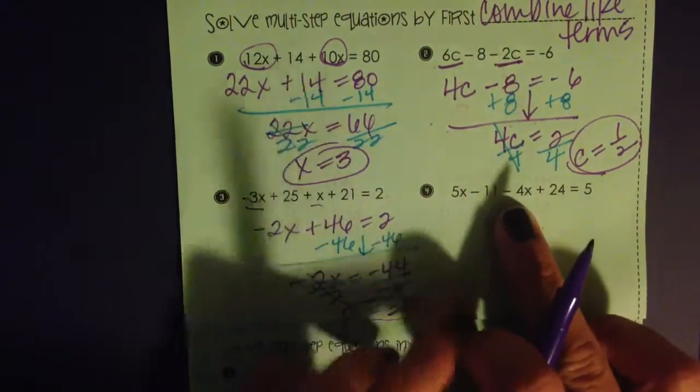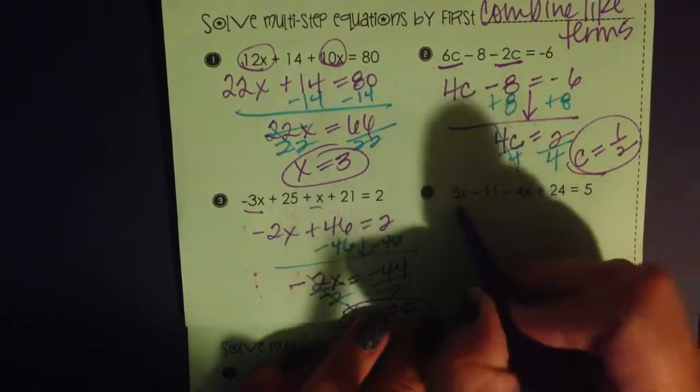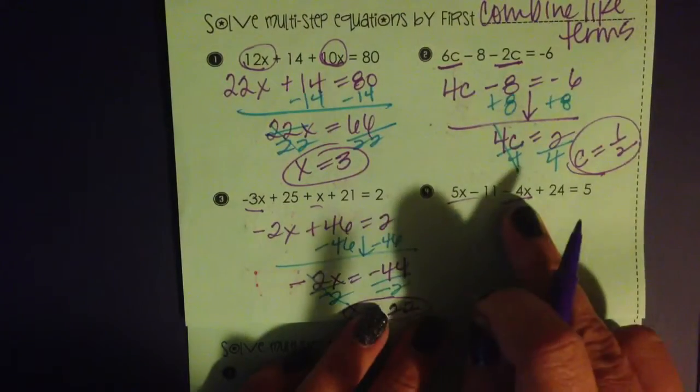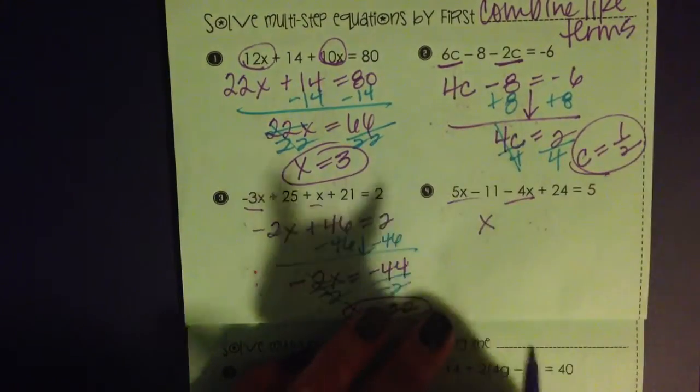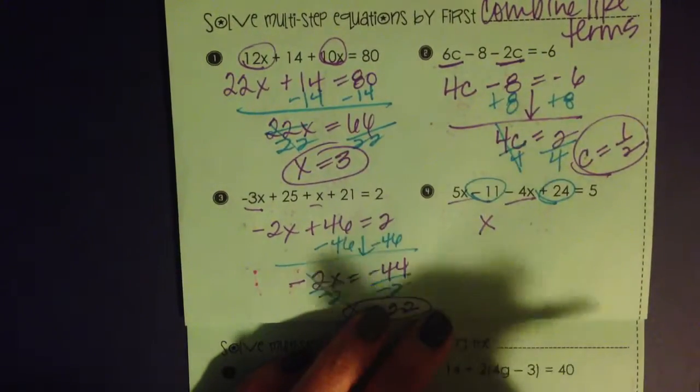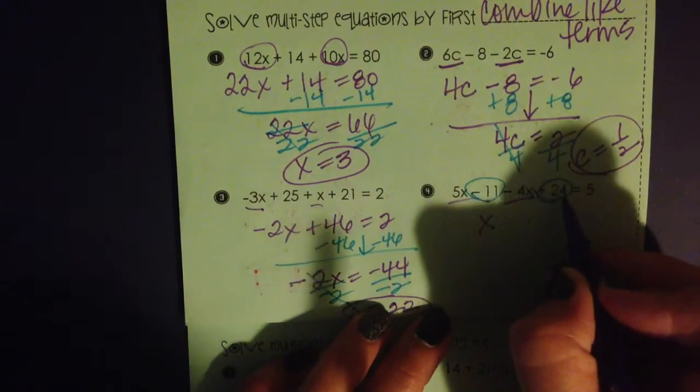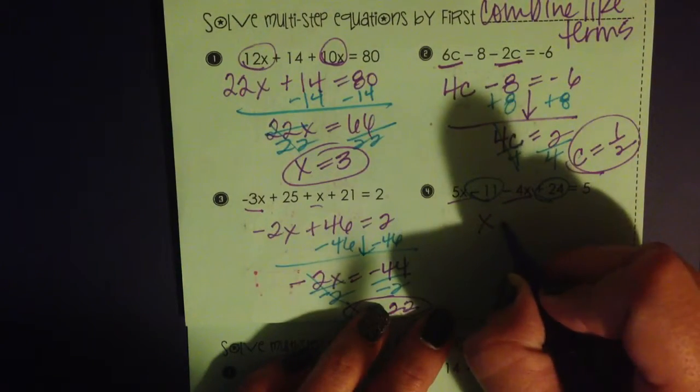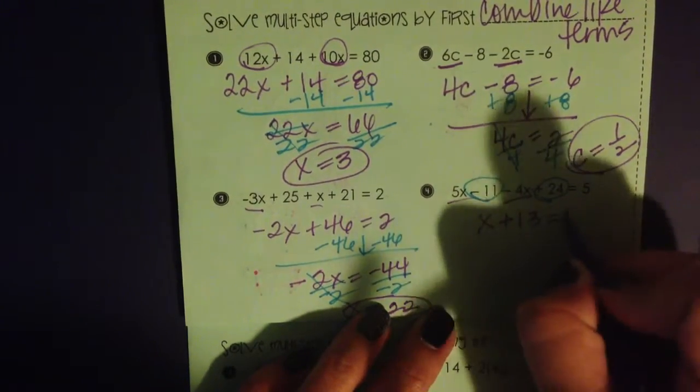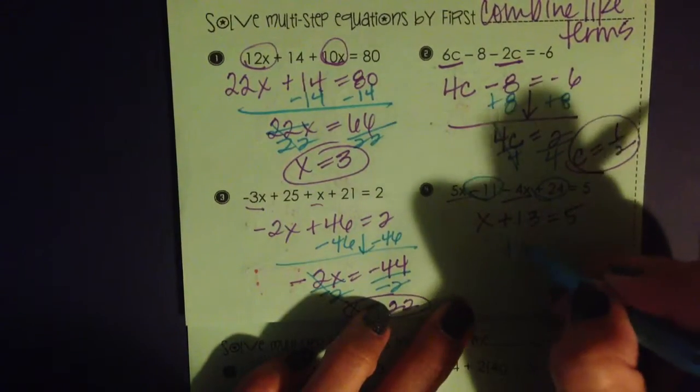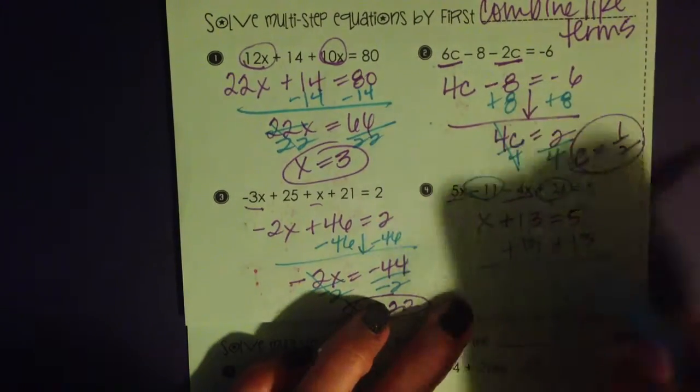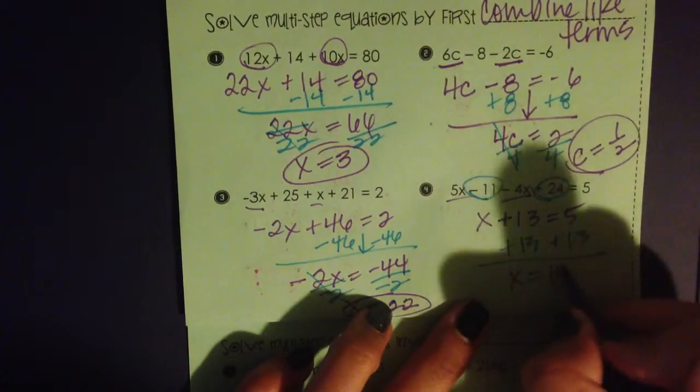5x minus 11 minus 4x plus 24 equals 5. Like terms, 5x minus 4x is x. Negative 11 plus 24 is basically 24 minus 11. So I've got plus 13 equals 5. We're going to subtract 13 from both sides and find out that x is equal to negative 8.